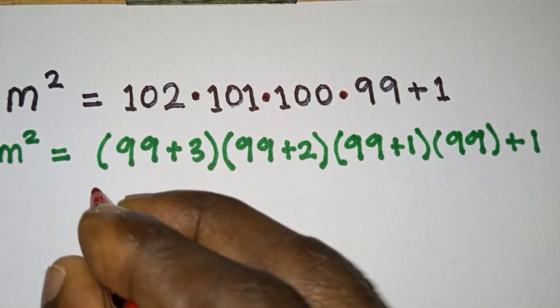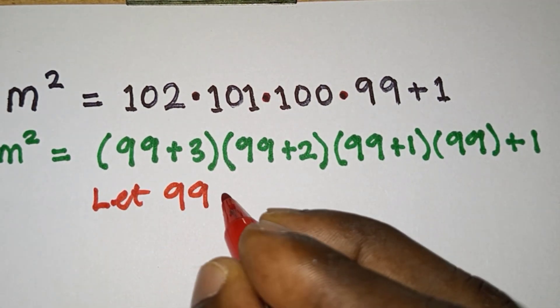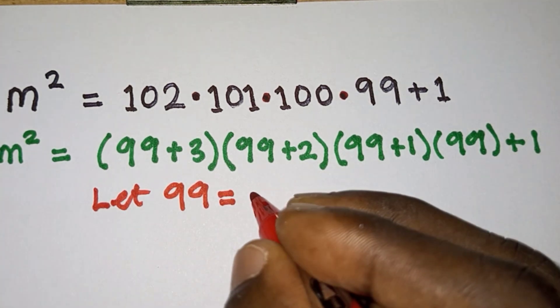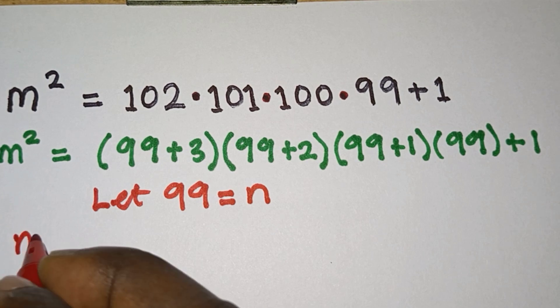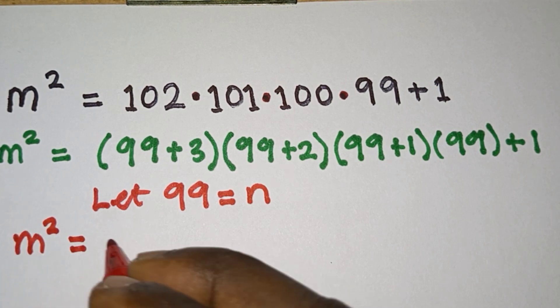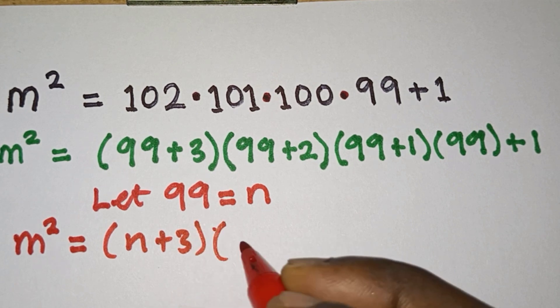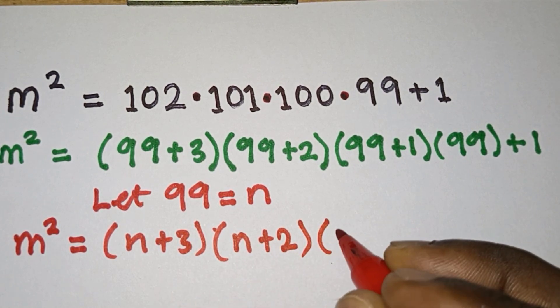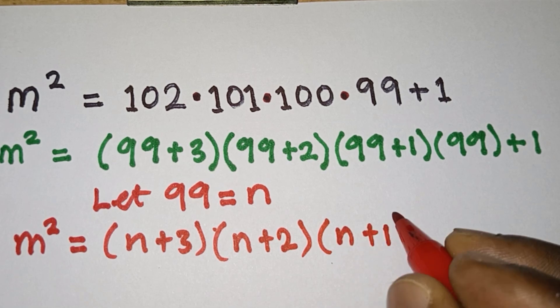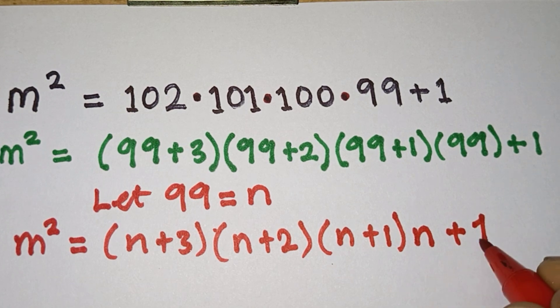Now the reason is that we want to let 99 equal to a certain variable, let's call it n, so that we will have m² = (n+3)(n+2)(n+1)n + 1.